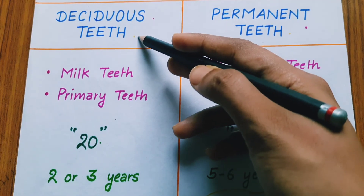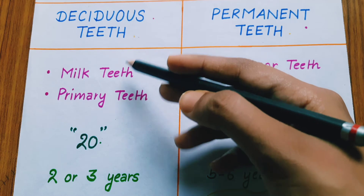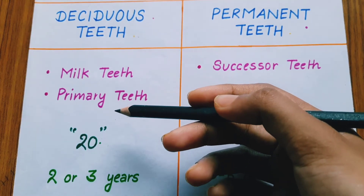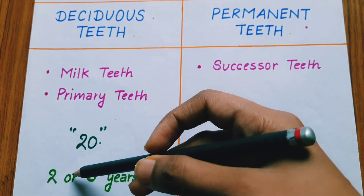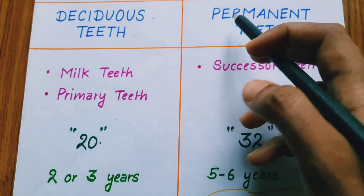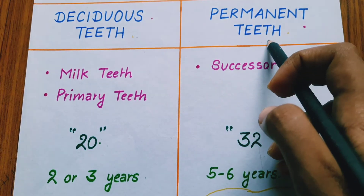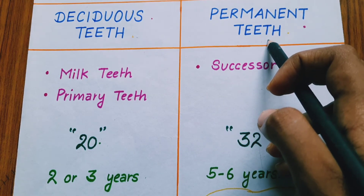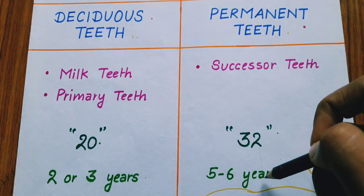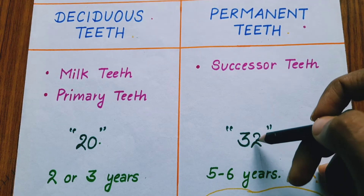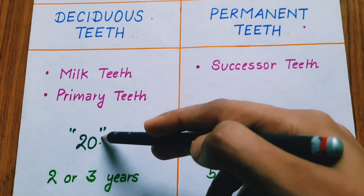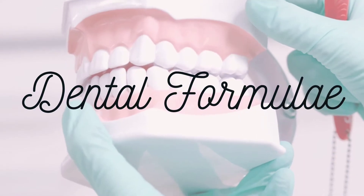So primary and then the permanent are the two sets of teeth in the life of humans, due to which we are called diphyodont. The deciduous teeth number 20, and the growth of the entire set is generally completed by the time a child is two or three years of age. The permanent teeth start developing at around five to six years of age, replacing the 20 deciduous teeth.